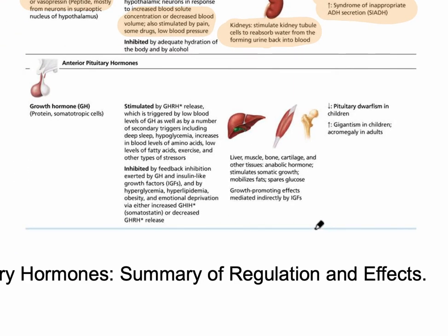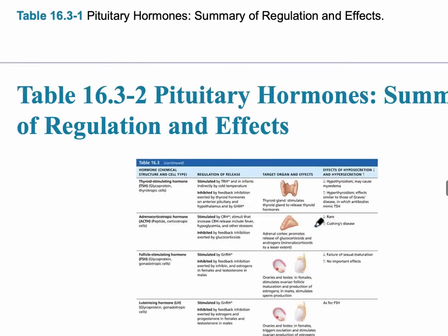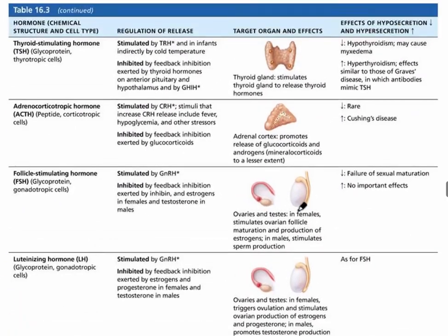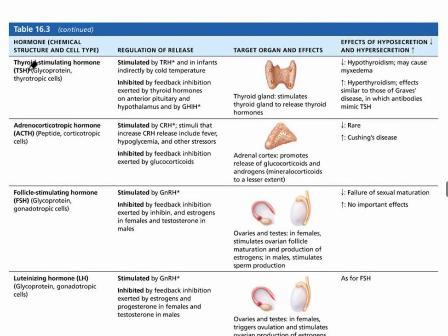There are six hormones from the anterior pituitary gland, which directly produces them. Make sure you know what stimulates each one. The liver, muscle, bone, and cartilage are target organs for growth hormone, and the homeostatic imbalances are shown on the right. The next hormone is thyroid stimulating hormone (TSH), stimulated by TRH from the hypothalamus.